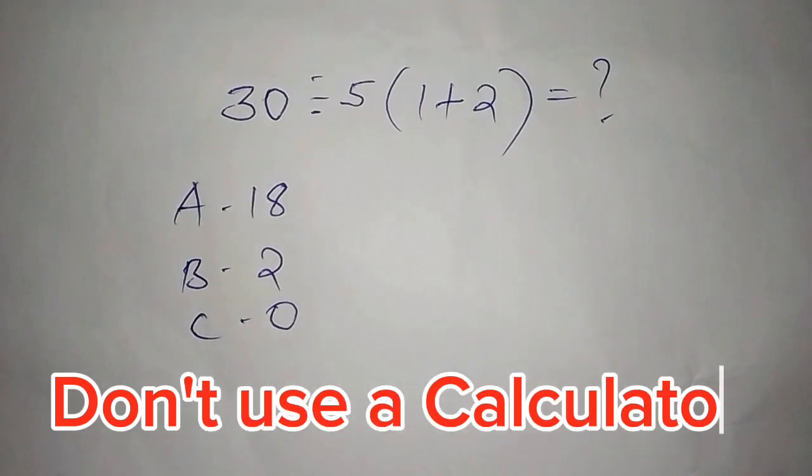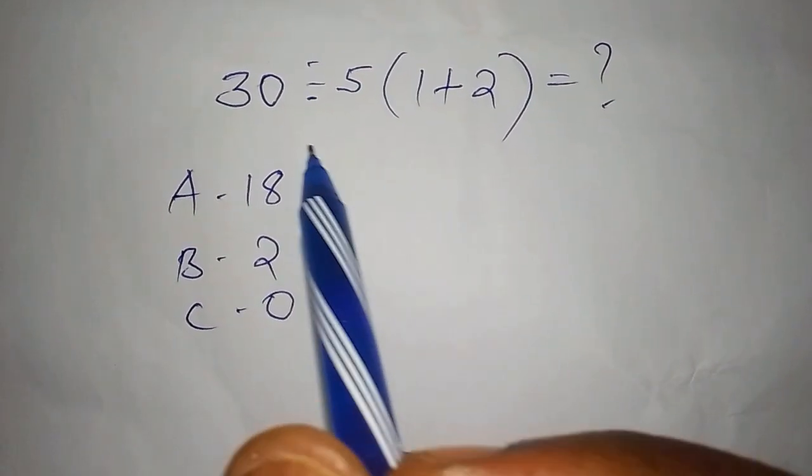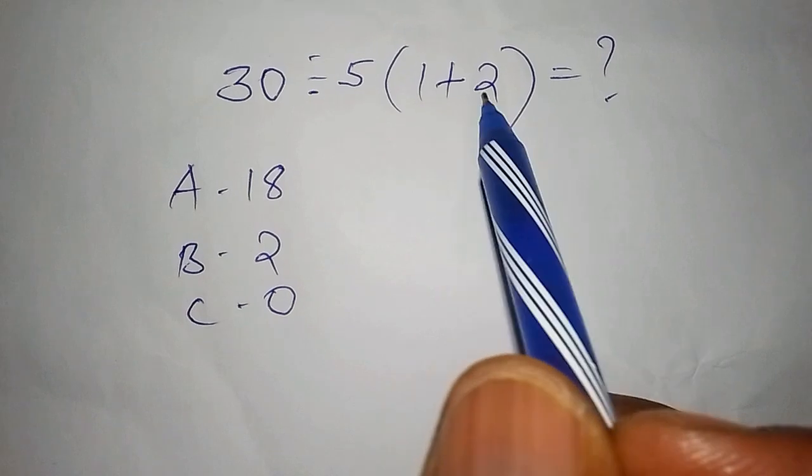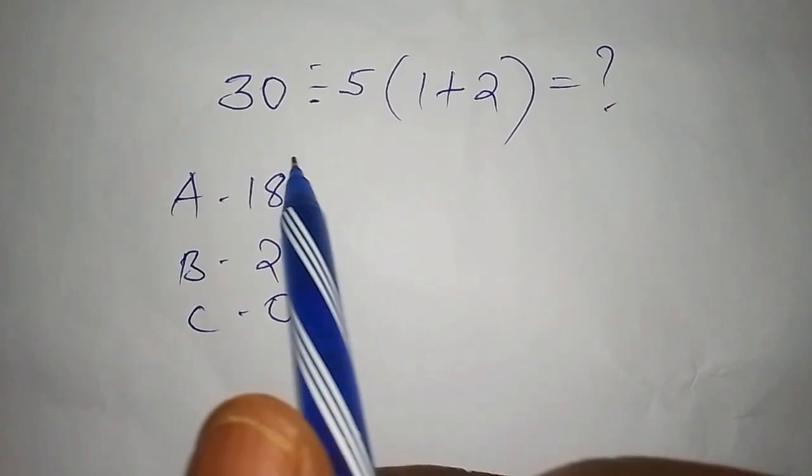Hello everyone, welcome to solving this math problem. So 30 divided by 5 into bracket 1 plus 2. A lot of people got this wrong.